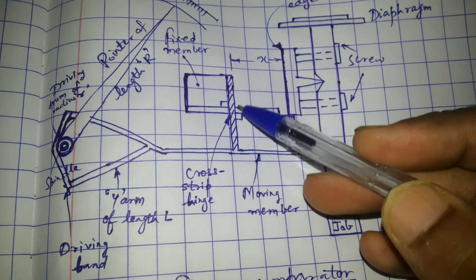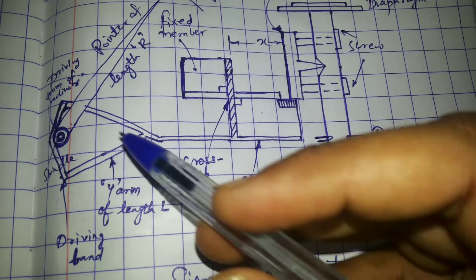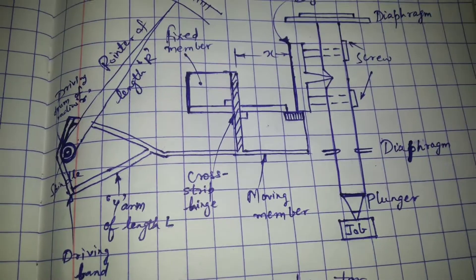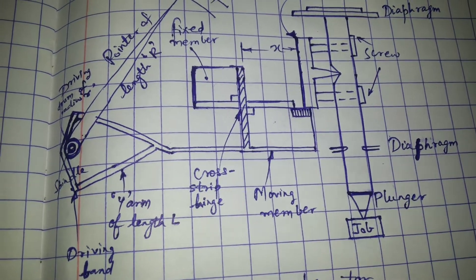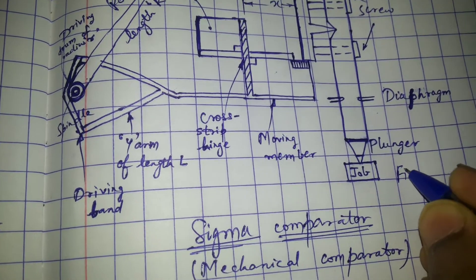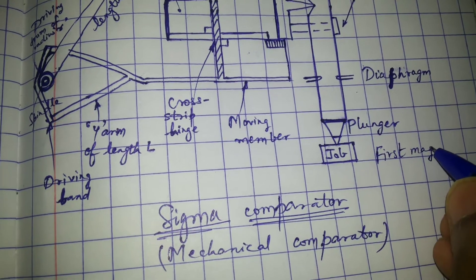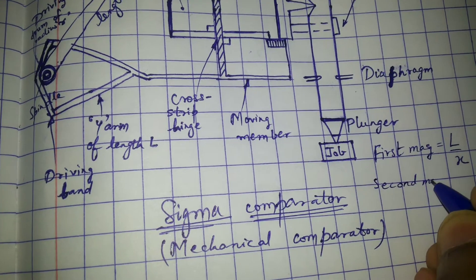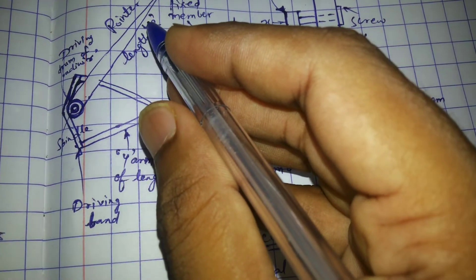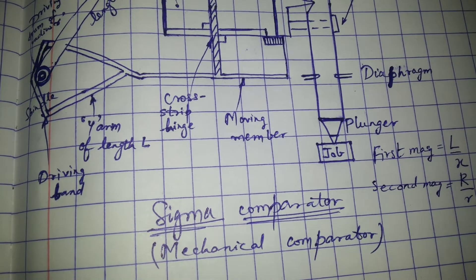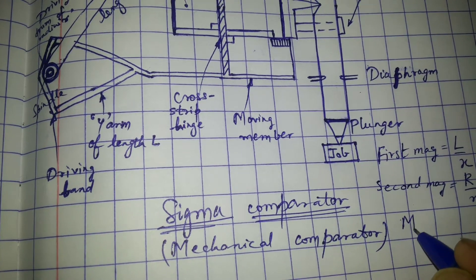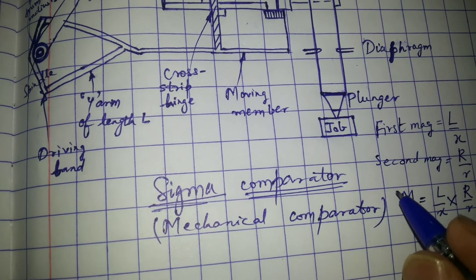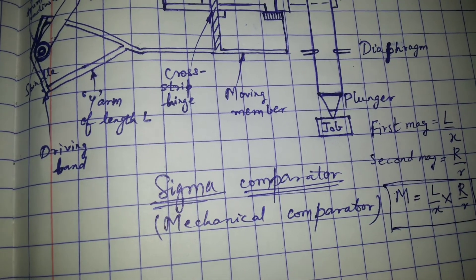L is the length of the arm, small r is the radius of the drum, and capital R is the length of the pointer. The first magnification is L upon X. The second magnification is capital R upon small r. Therefore, the total magnification of the Sigma comparator is L upon X multiplied by capital R upon small r.